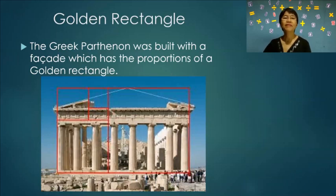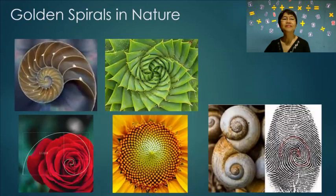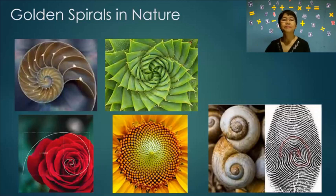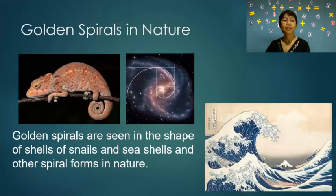The Greek Parthenon was built with a facade that has the proportions of a golden spiral. Golden spirals are also found in nature — in shells of snails, seashells, plants, flowers, and even in your thumbprint and other spiral forms in nature.